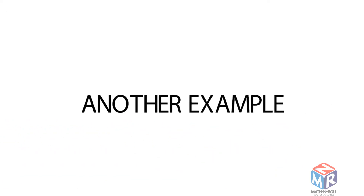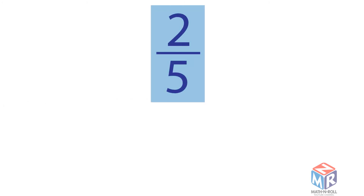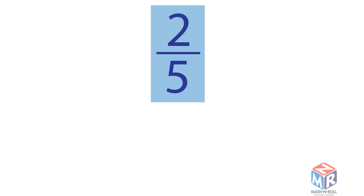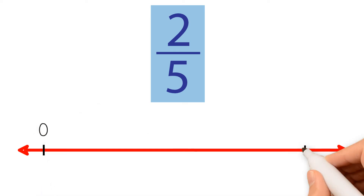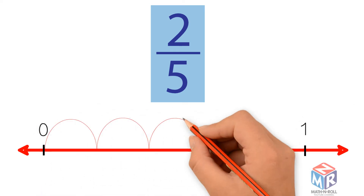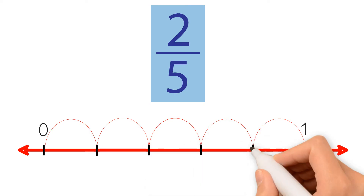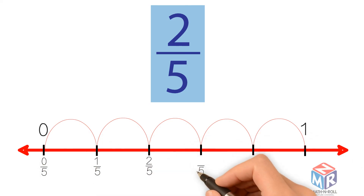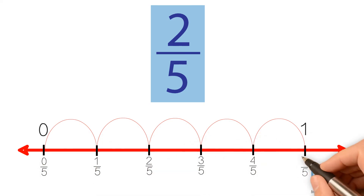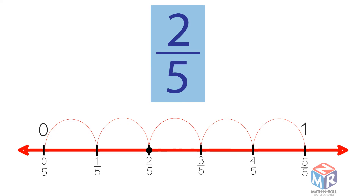Let's try another example. Locate 2/5 on the number line. Label a line from 0 to 1. Divide the line into 5 equal lengths, or fifths. 2/5 is 2 out of 5 equal lengths — a point at 2/5 represents the distance from 0 to 2/5.